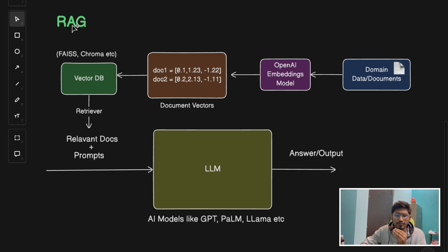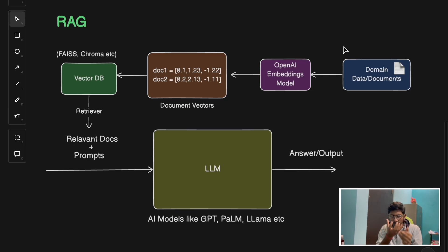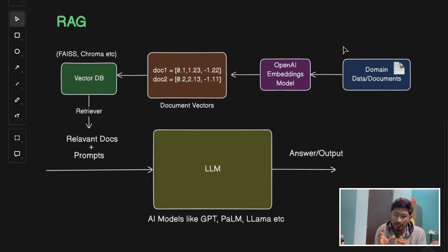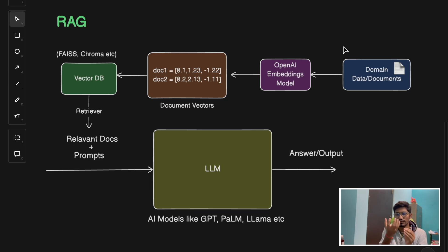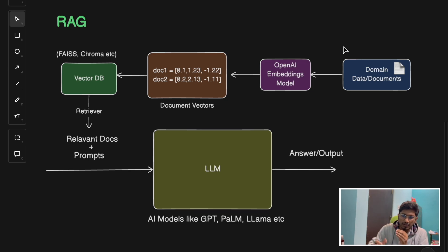What does RAG do? Basically, RAG combines the power of LLMs with a retrieval system. This entire retrieval system will retrieve some information - it can be latest, updated information about some events - and then use that information to give the answer to the user.